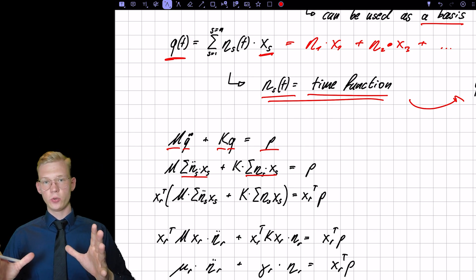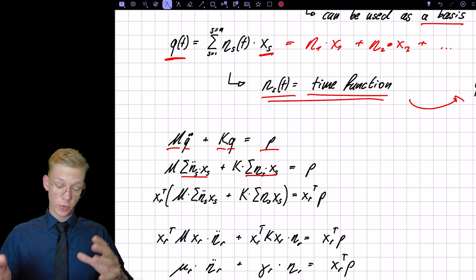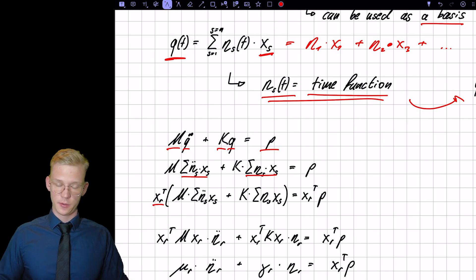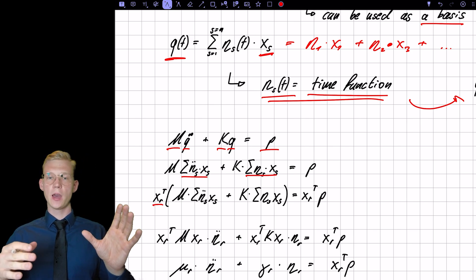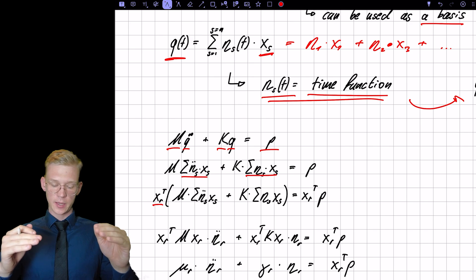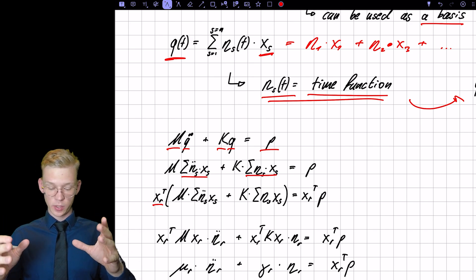So now we substitute our Qs and our Q double dots with the sum. The next thing we do is we project or we pre-multiply the mode XR. And we saw that if we have a mode that is orthogonal, that is not XR, it will disappear.